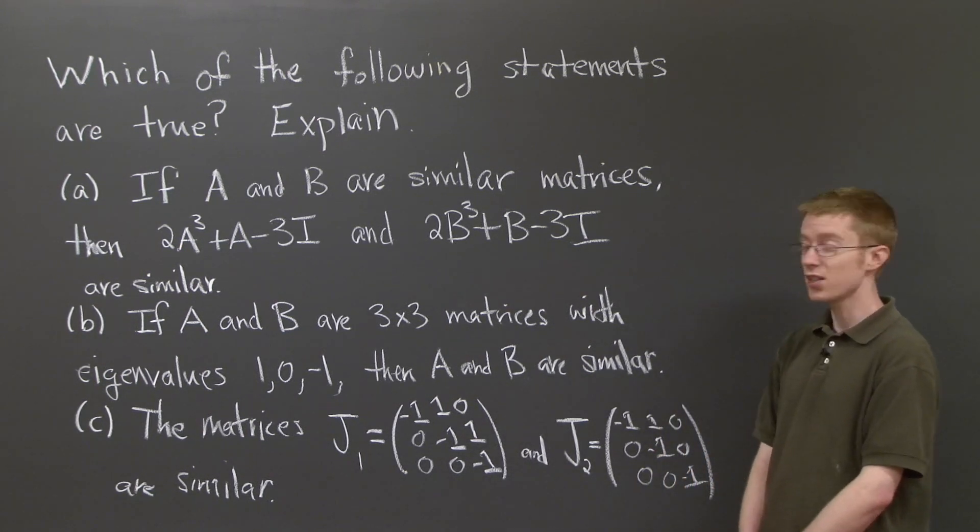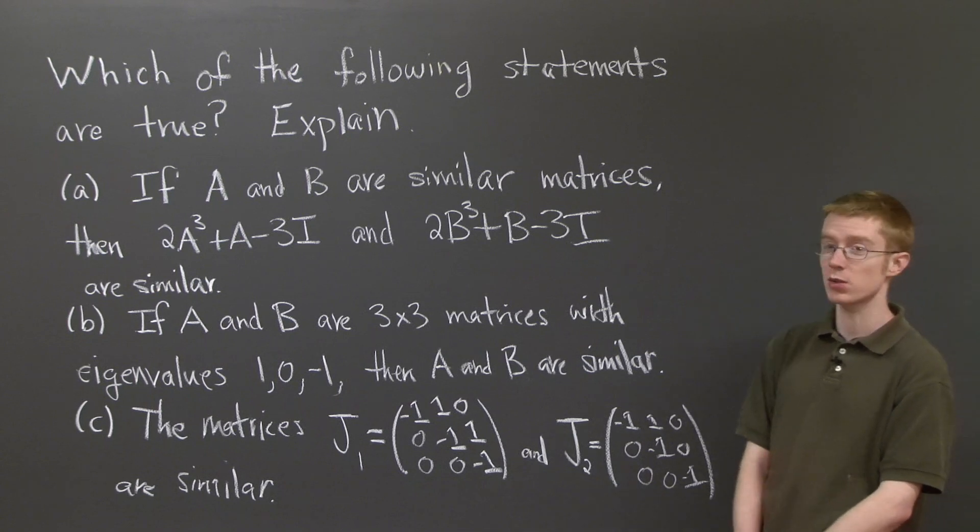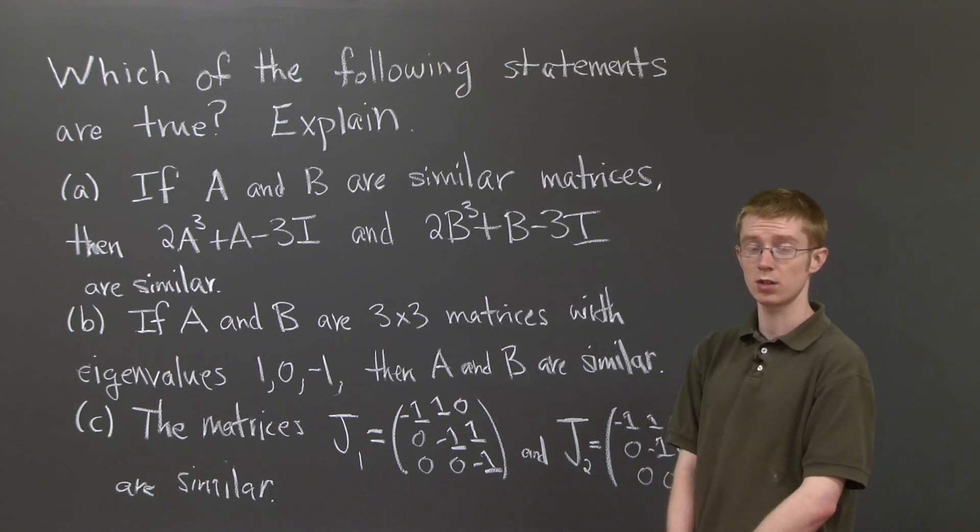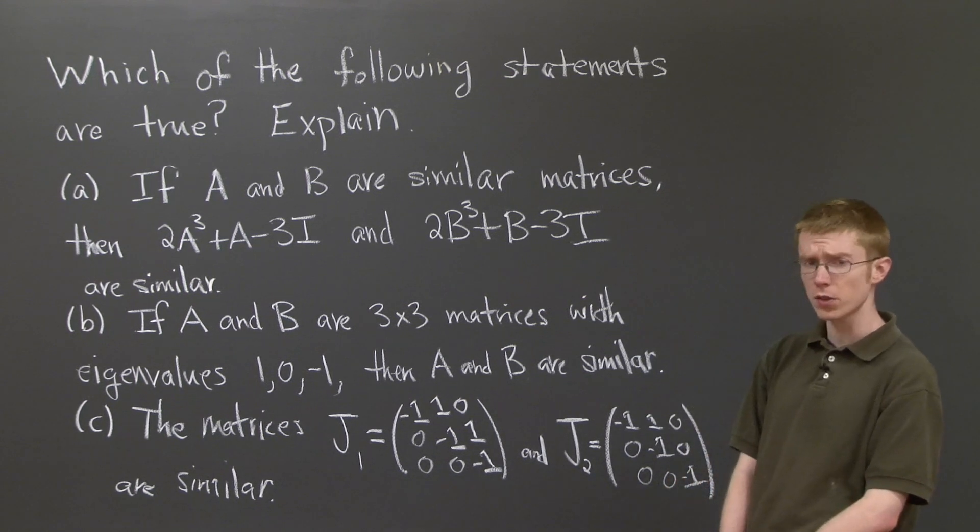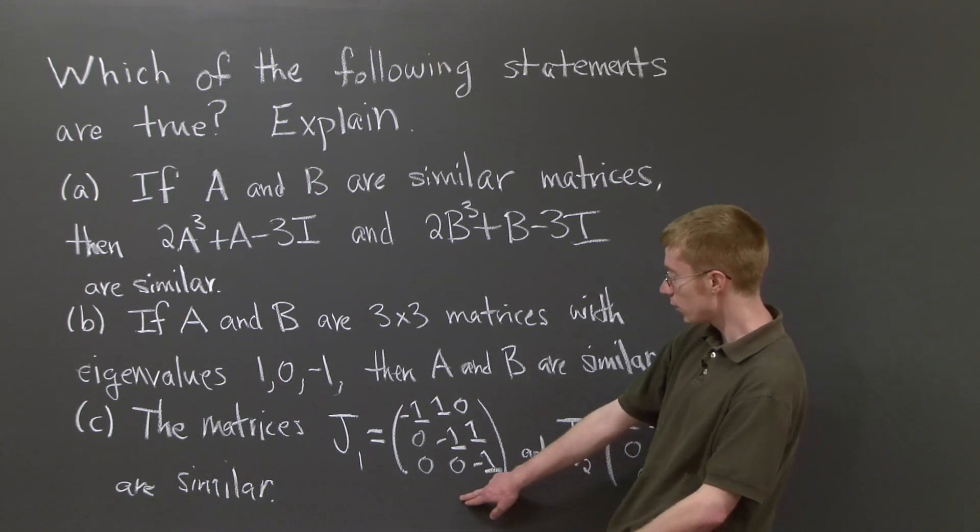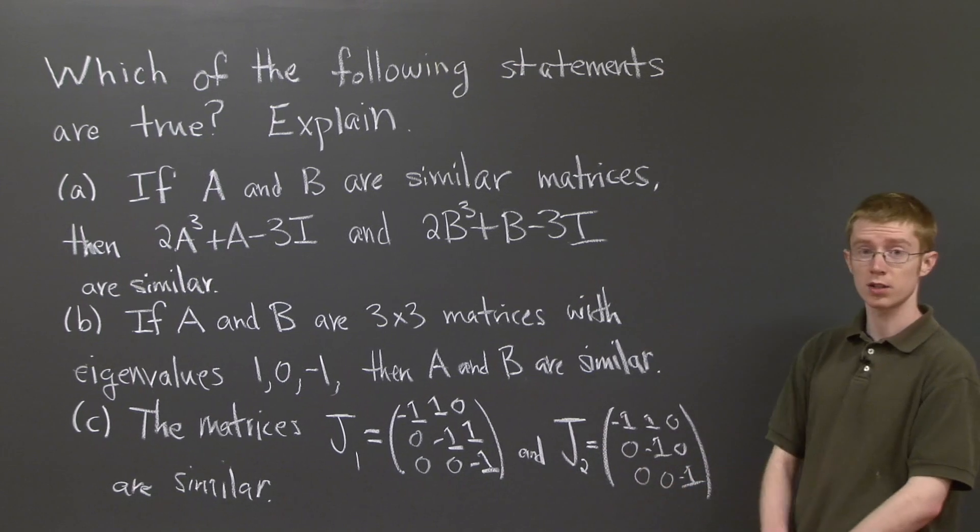The second question asks if A and B are 3 by 3 matrices with eigenvalues 1, 0, and negative 1, then they're similar. And the third part asks you whether these two J matrices are similar.